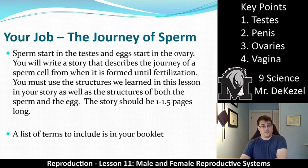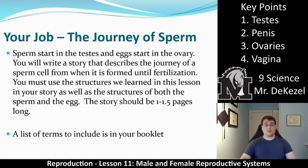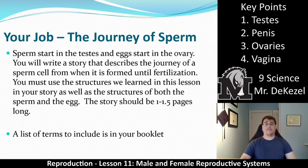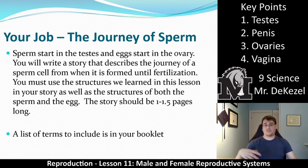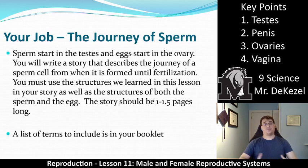What I would like you to do is write a story that shows the journey of sperm throughout all of these different structures. Sperm starts in the testes and eggs start in the ovary. Write a story that describes the journey of a sperm cell from when it's formed in the testes until fertilization in the fallopian tube. You have to use the structures we learned in this lesson as well as the structures of both the sperm and the eggs — the flagellum, the mitochondria, the centrioles, the acrosome, the nucleus, the zona pellucida, and the cytoplasm. You should use all of these terms.